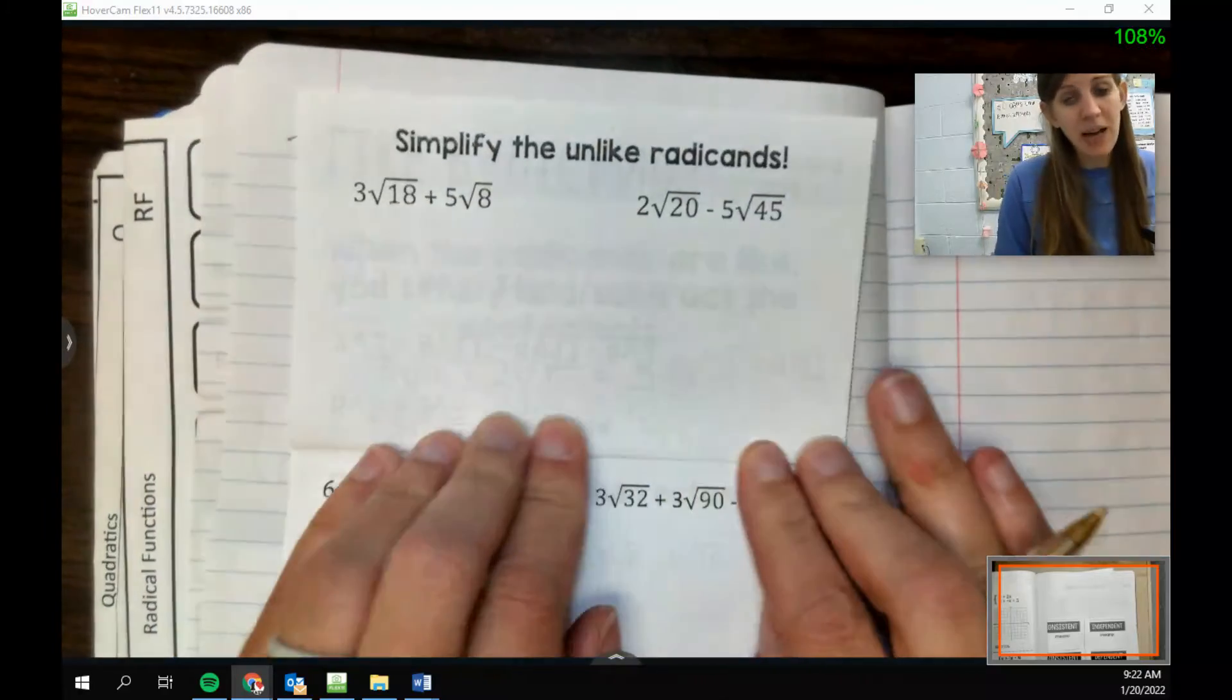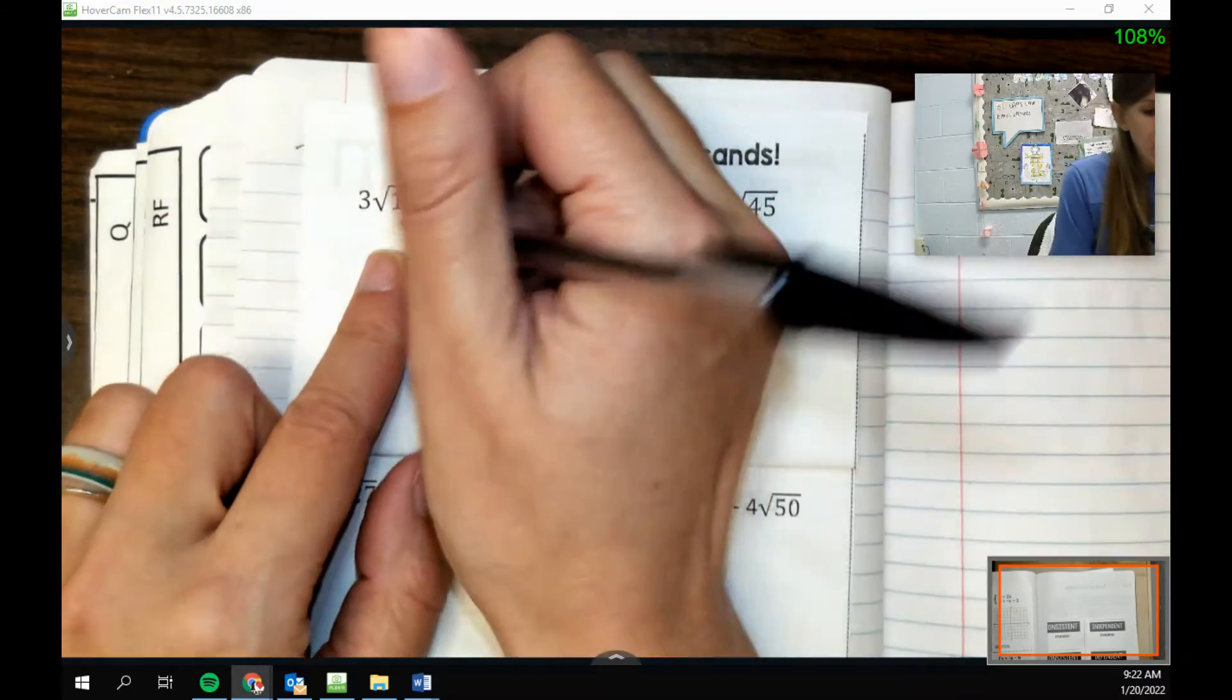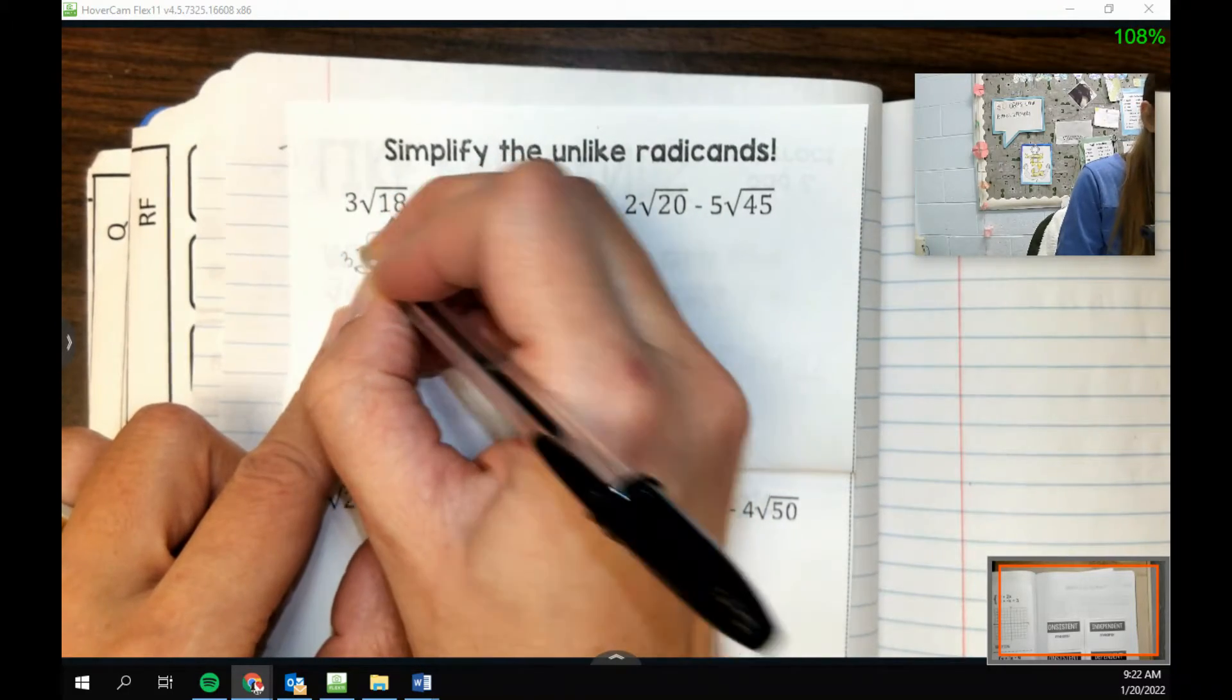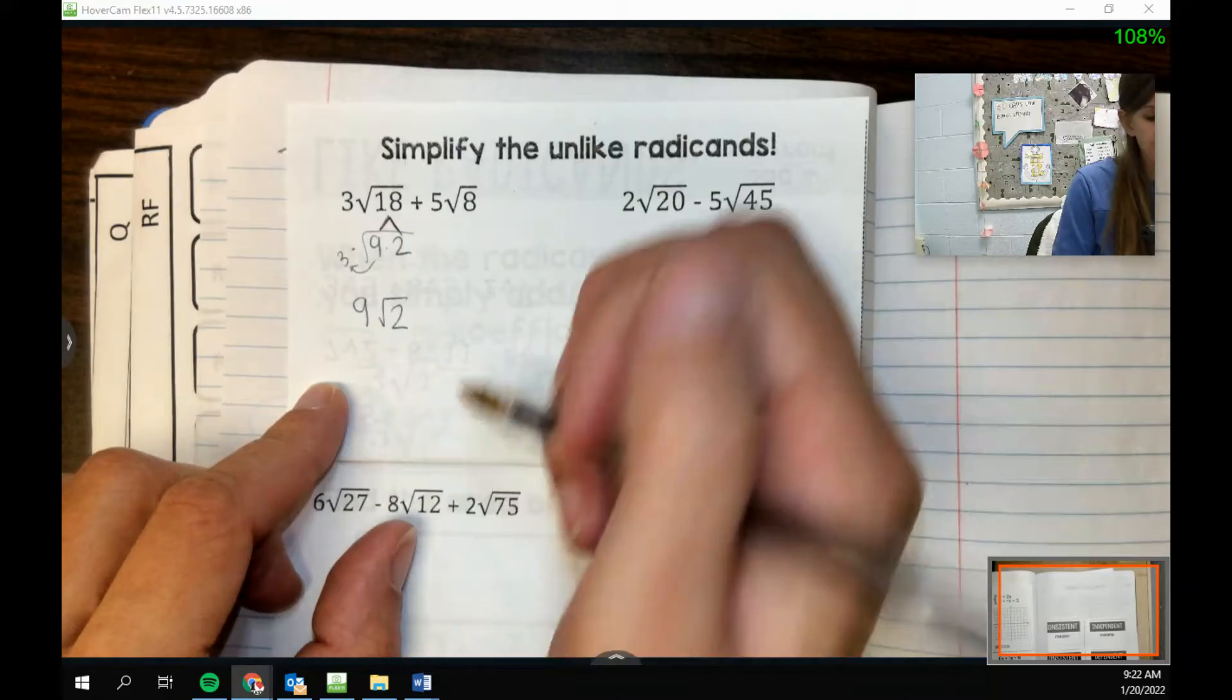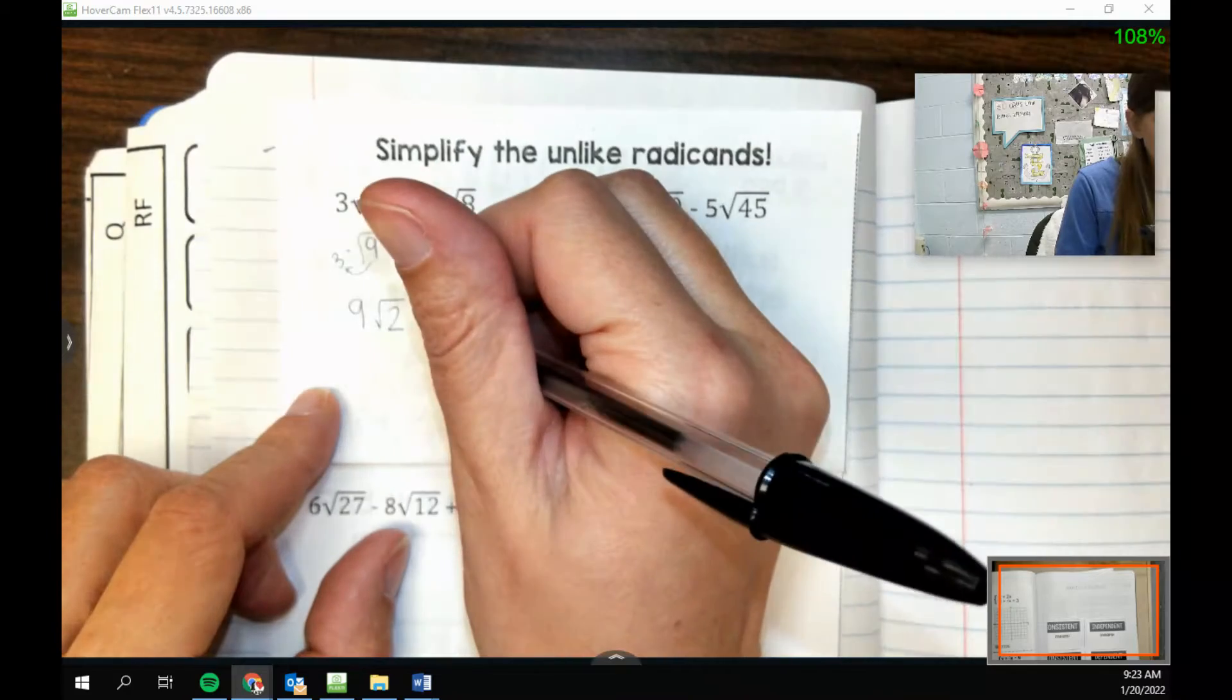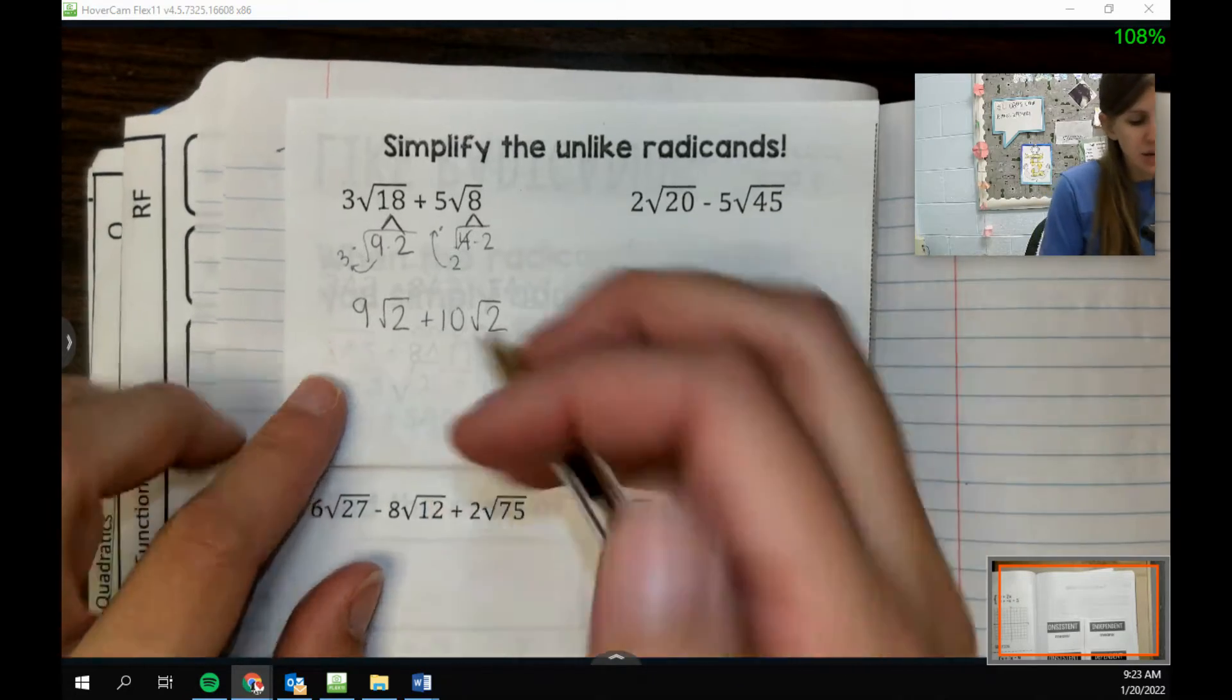Now looking at this next one, we have unlike radicands. But we might still be able to simplify. Like 18 and 8 are pretty big. I think about 18 as really 9 times 2. When I square root this, a 3 comes out. But there's already a 3 out, so 9 root 2. The root 8, I can break up into 4 times 2, and when I square root the 4, it is 2, so 10 root 2. Now our roots are the same, so we're going to add these coefficients for 19 root 2.